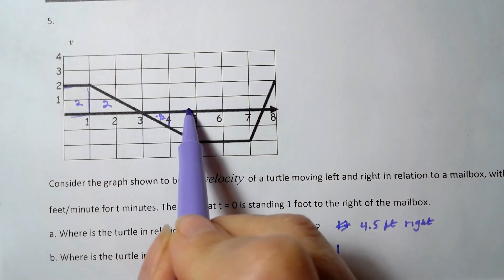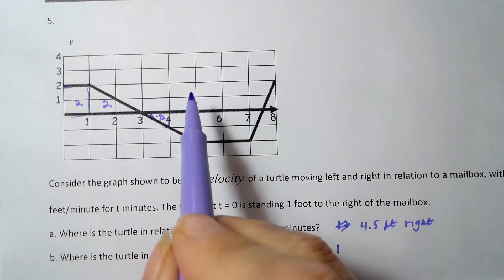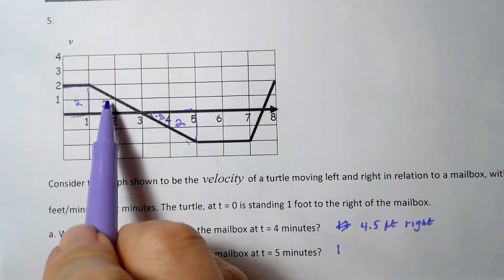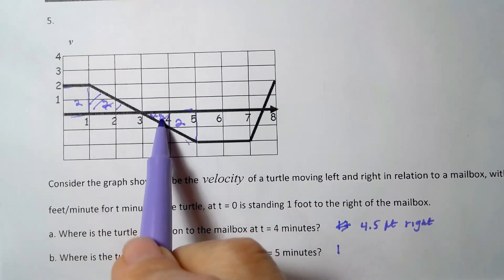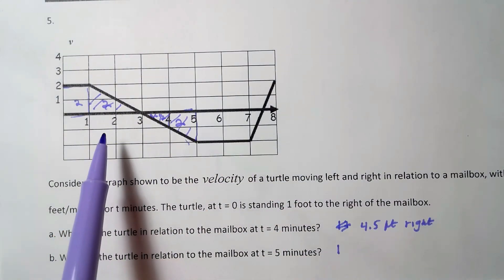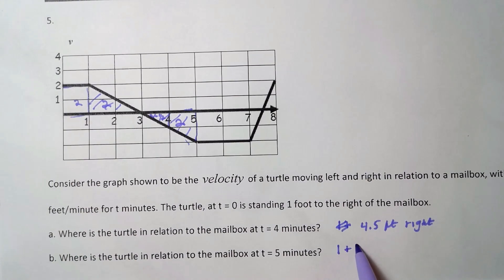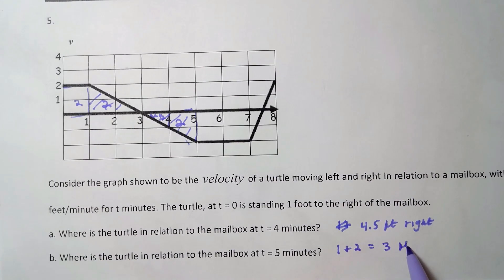And now if I compute this area below, this is one half times two times two is two, right? So these two areas here are the same, they cancel each other out. So two feet plus the one foot is equal to three feet, and he's still to the right of the mailbox because there's only area above here.